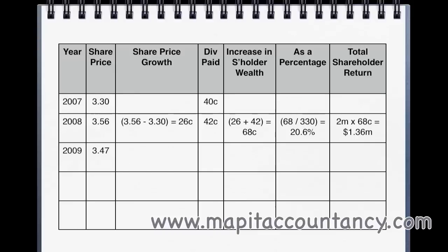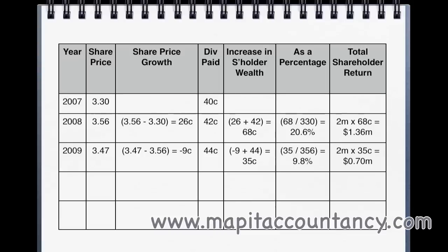In 2009, the share price was $3.47, giving a share price decrease of $0.09 from the $3.56 in 2008. However, we still had a dividend paid of $0.44, giving an overall increase in shareholder wealth of $0.35. To get that return, we would have needed to invest at $3.56. So $0.35 over $3.56 is a 9.8% return. Total shareholder return: 2 million shares times $0.35 is $0.7 million.